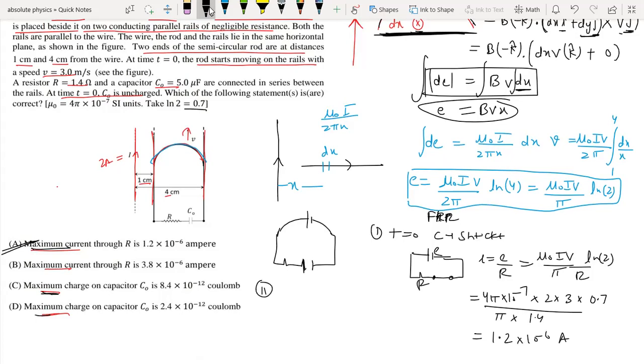For the second part, we need to find the maximum charge. The charge is maximum at steady state when the capacitor acts as an open circuit and current becomes zero.